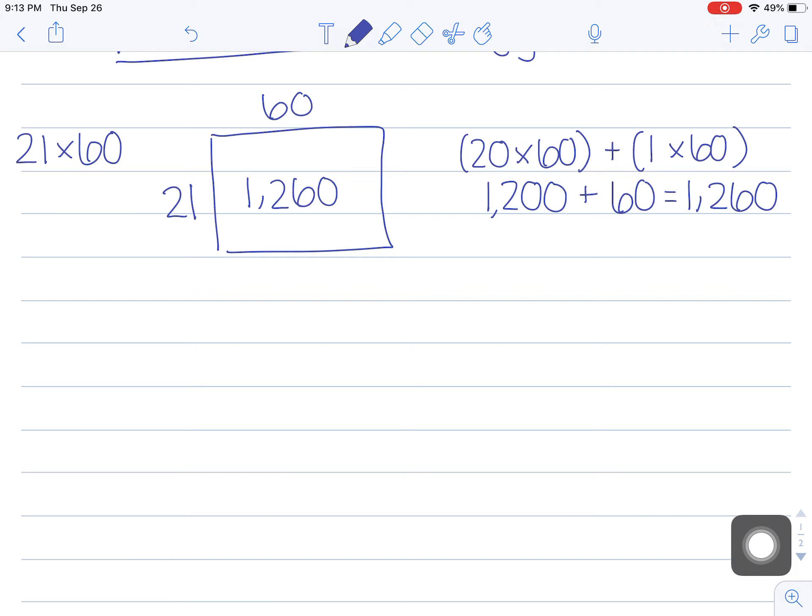The next problem I'm going to have you do is 21 times 59. Again, in problem strings we always want to use the work that we previously solved to help us. I already know the answer to 21 times 60, so I'm going to take that array that I already used and duplicate it here. Instead of drawing just 60, I'm going to put a little bracket next to 60 because I don't need to know what 21 times 60 is—I need to know what 21 times 59 is, so I'm going to take a part of 60 away.